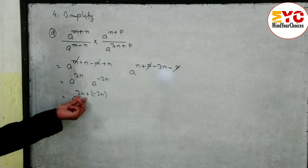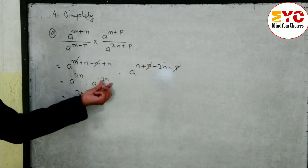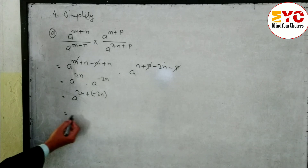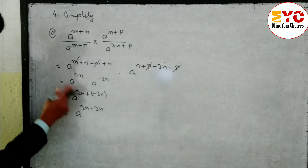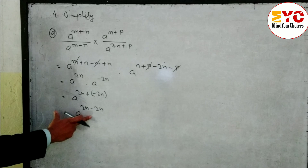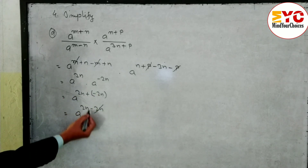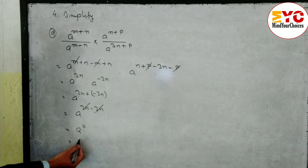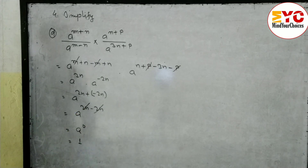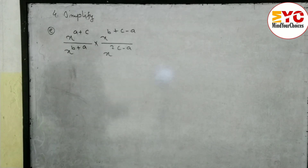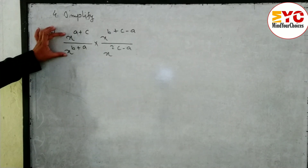Base same, in multiply we add the power: a power (2n minus 2n). Both cancel so remaining is a power 0, and any number or variable to the power 0 means 1. Hope you understand question (d). Now look at question number (e) — same base, same process.